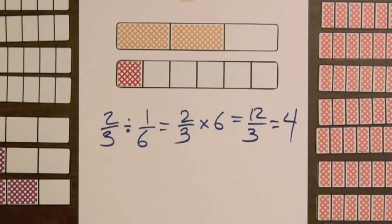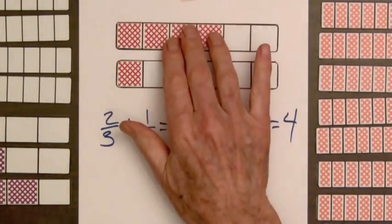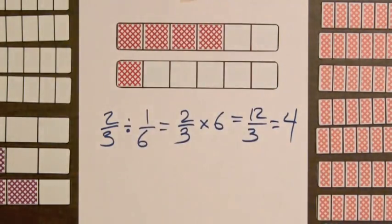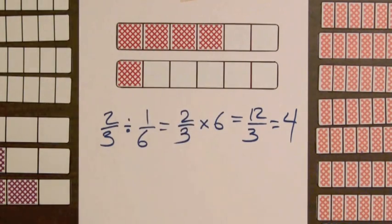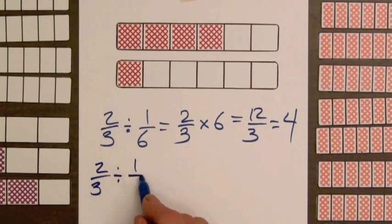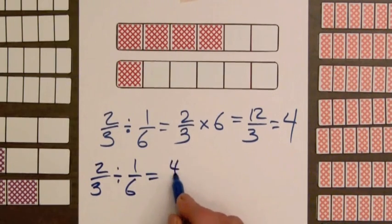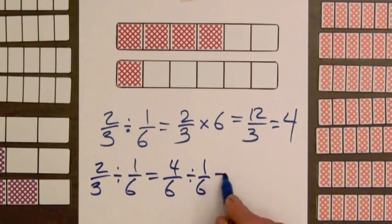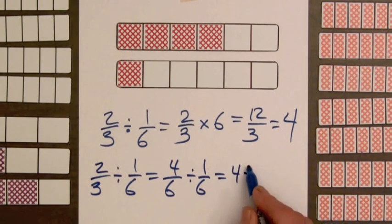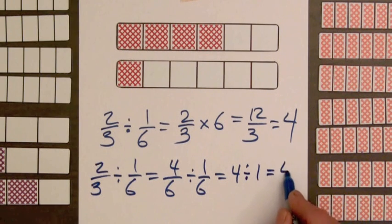Notice what happens when we replace the two-thirds bar by the equivalent four-sixths bar. Now we can see that one-sixth fits in here four times. In fact, this is just a matter of dividing whole numbers, dividing four by one. So two-thirds divided by one-sixth equals four-sixths divided by one-sixth. And now we've got the same size parts. In both cases, this is going to be four divided by one, which is four.